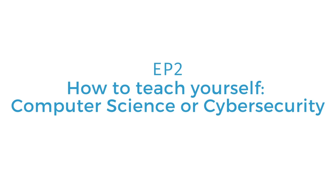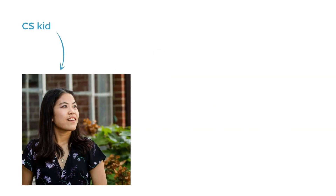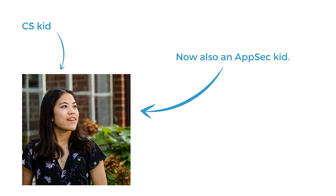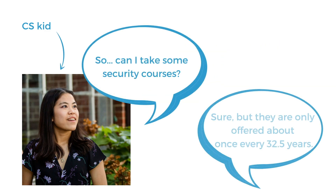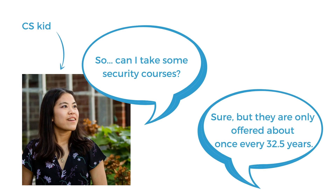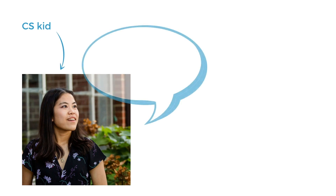So before we get started, let's talk a little bit about my background in technology. I have a college degree in computer science, and now I work in application security. And from very early on in college, I actually found security topics really, really interesting, but my university was not really offering that many security specialized courses. So this means that in order to explore the field of security, I actually had to teach myself a lot of things. I started to teach myself binary exploitation and web hacking through the internet.